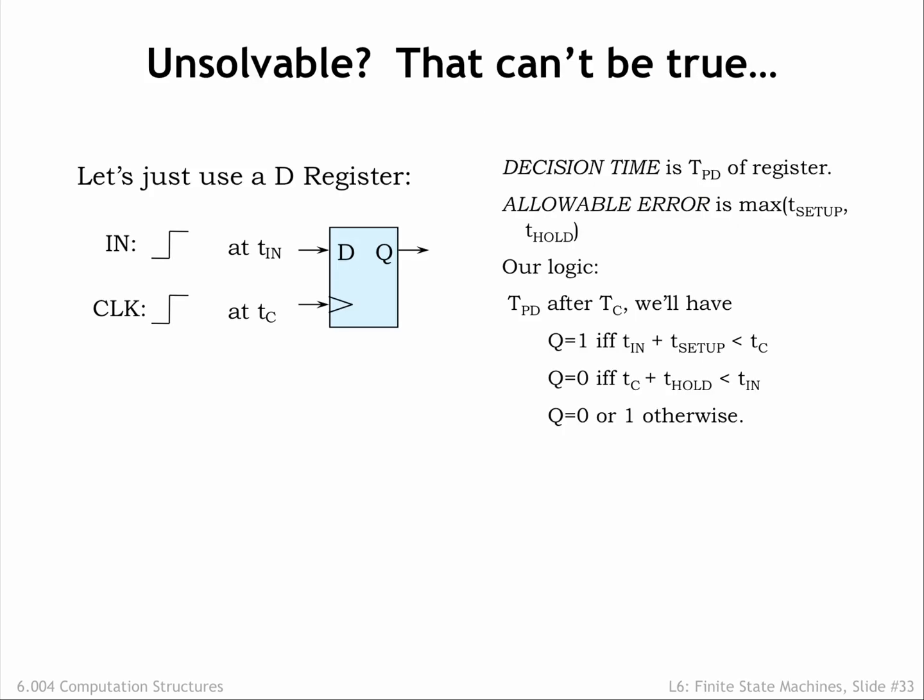But can't we just use a D register to solve the problem? We'll connect IN to the register's data input and connect clock to the register's clock input. We'll set the decision time td to the propagation delay of the register and the allowable error interval to the larger of the register's setup and hold times. Our theory is that if the rising edge of IN occurs at least tsetup before the rising edge of clock, the register is guaranteed to output a 1. And if IN transitions more than thold after the rising edge of clock, the register is guaranteed to output a 0. So far so good.